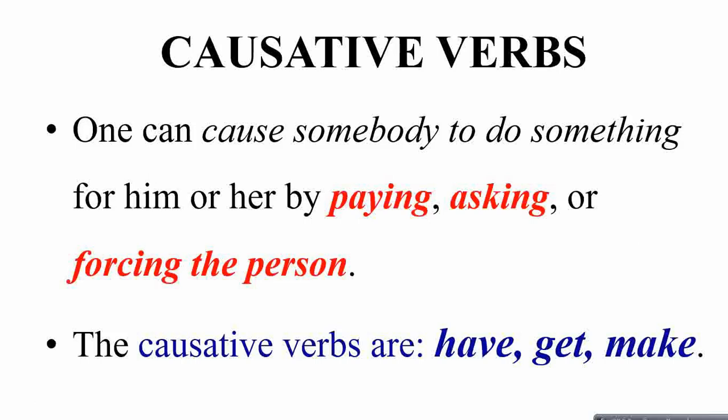So in either of these three forms you get the services done for yourself — for the first person from the second one. We use causative verbs when we want to get those actions done. The three main causative verbs we have are: have, get, and make.